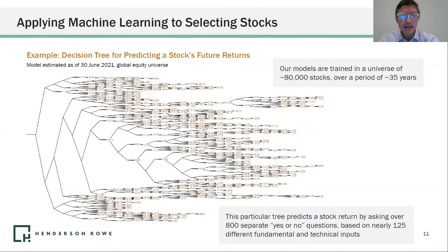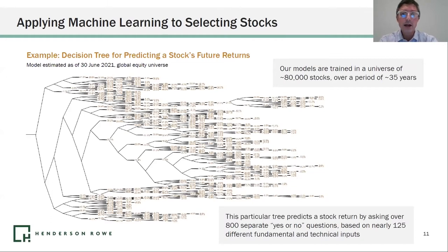I want to briefly walk through an applied example. This is actually something that we're doing to evaluate stocks. This is a decision tree that we've created at Raliant.